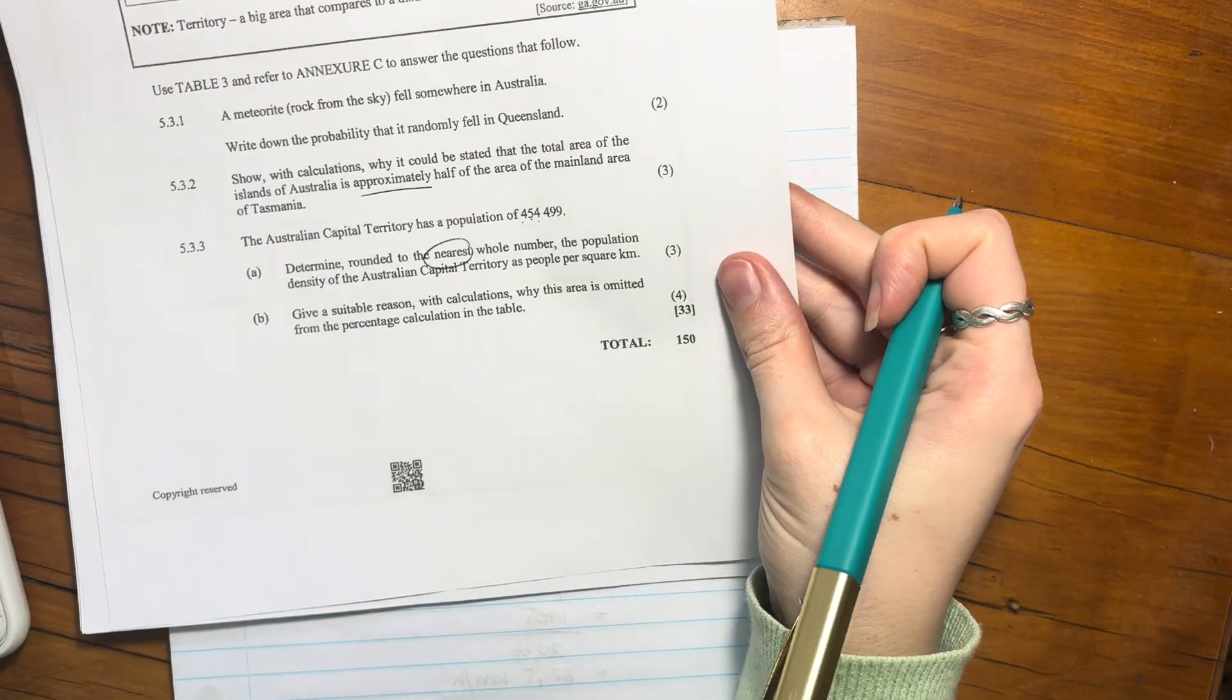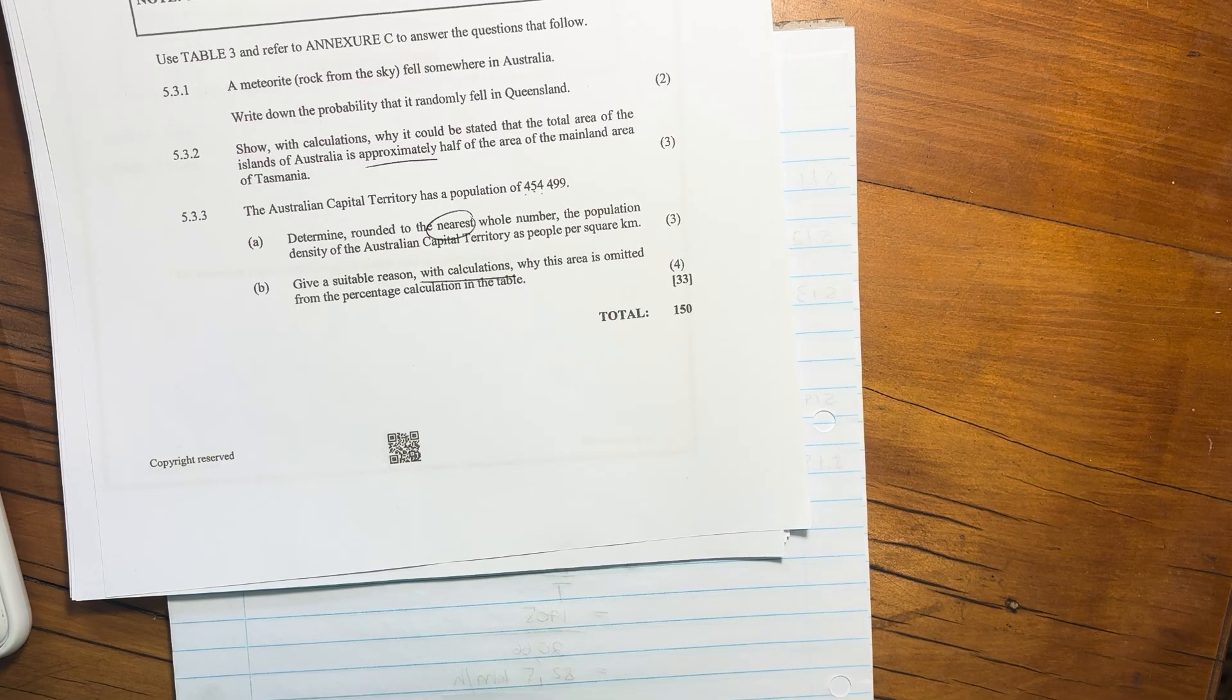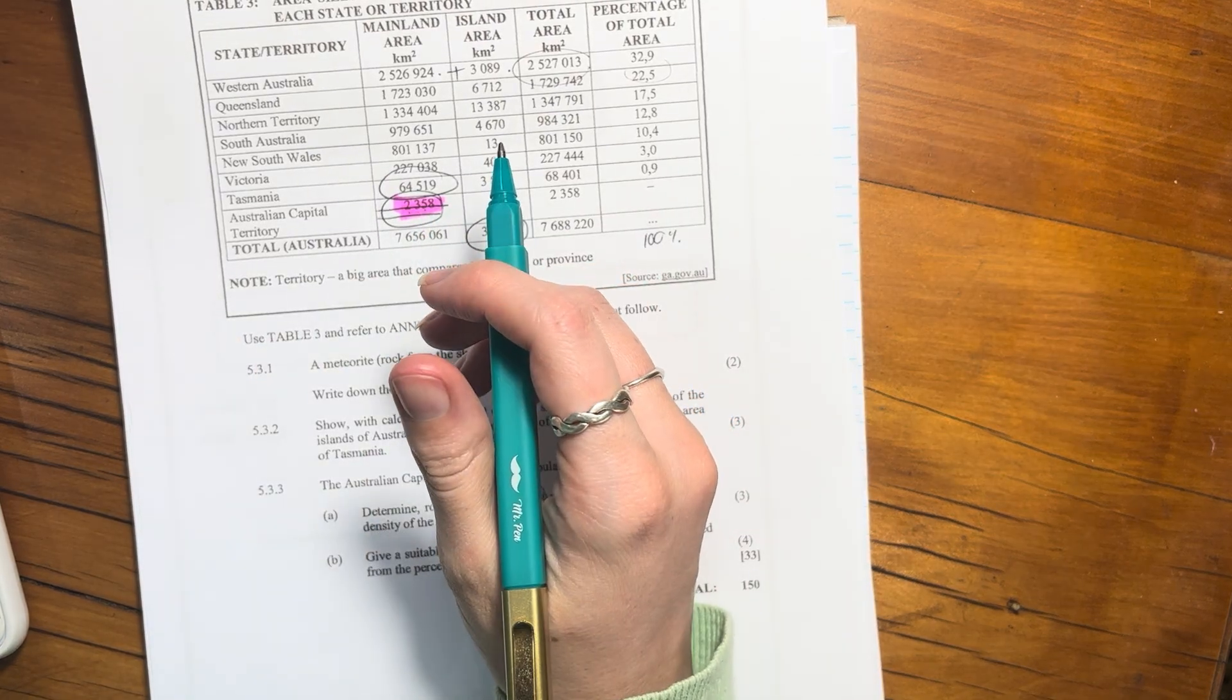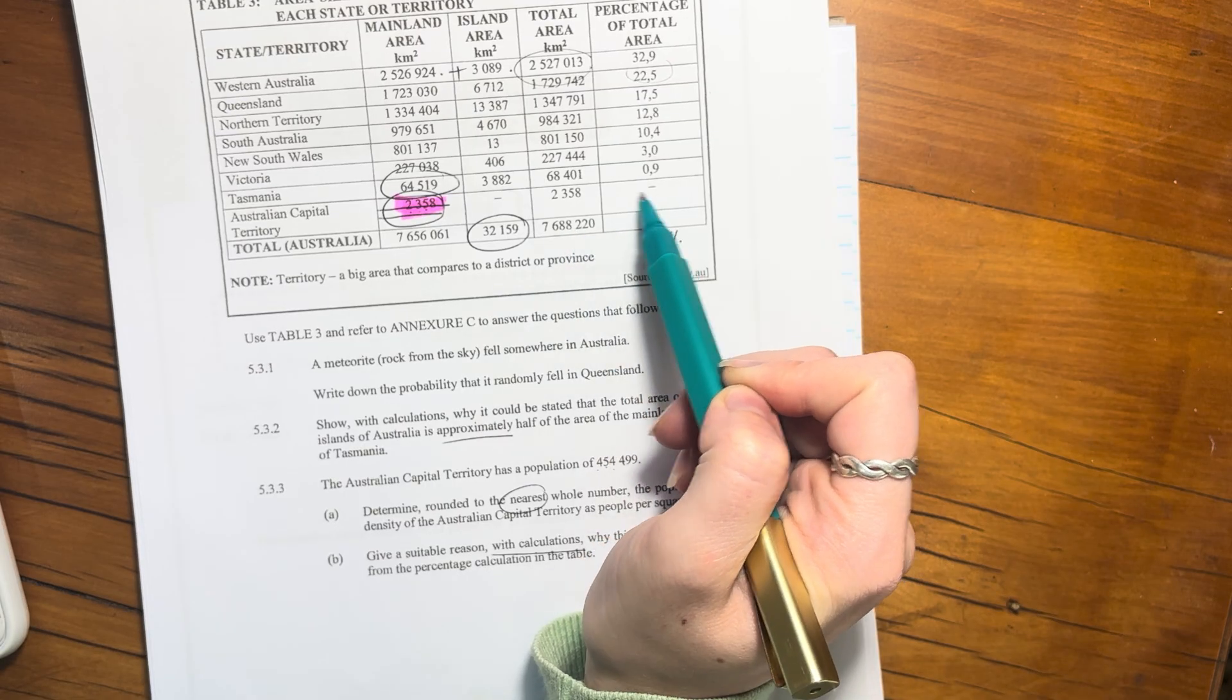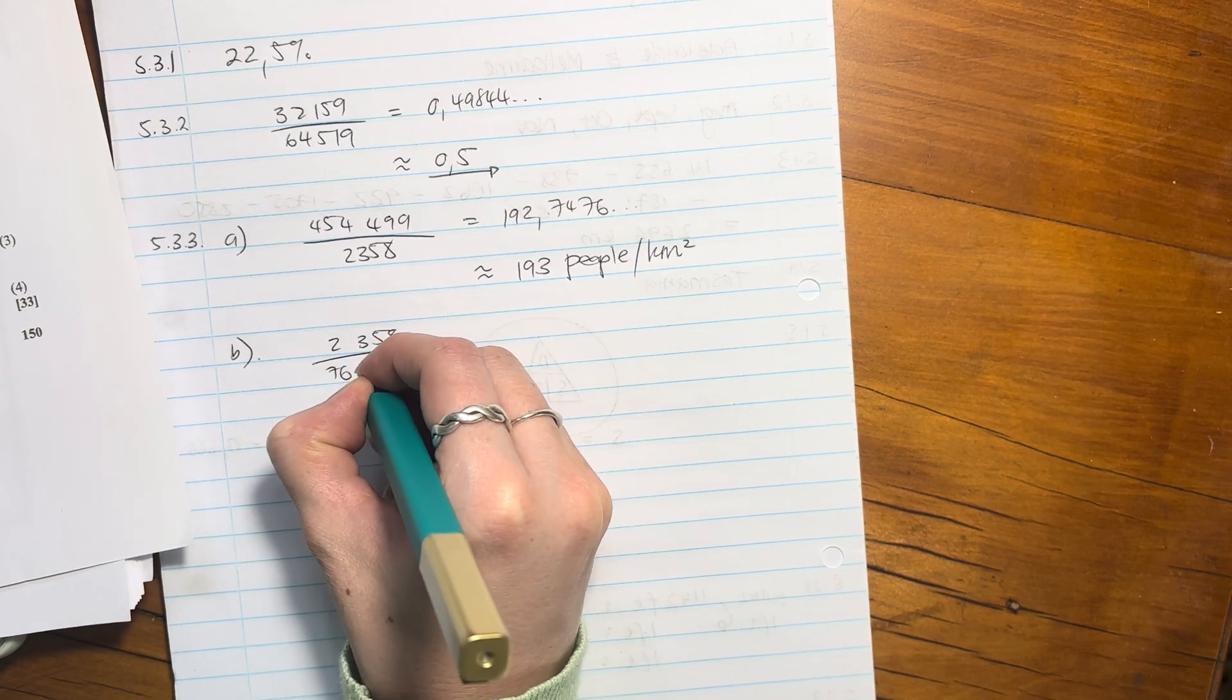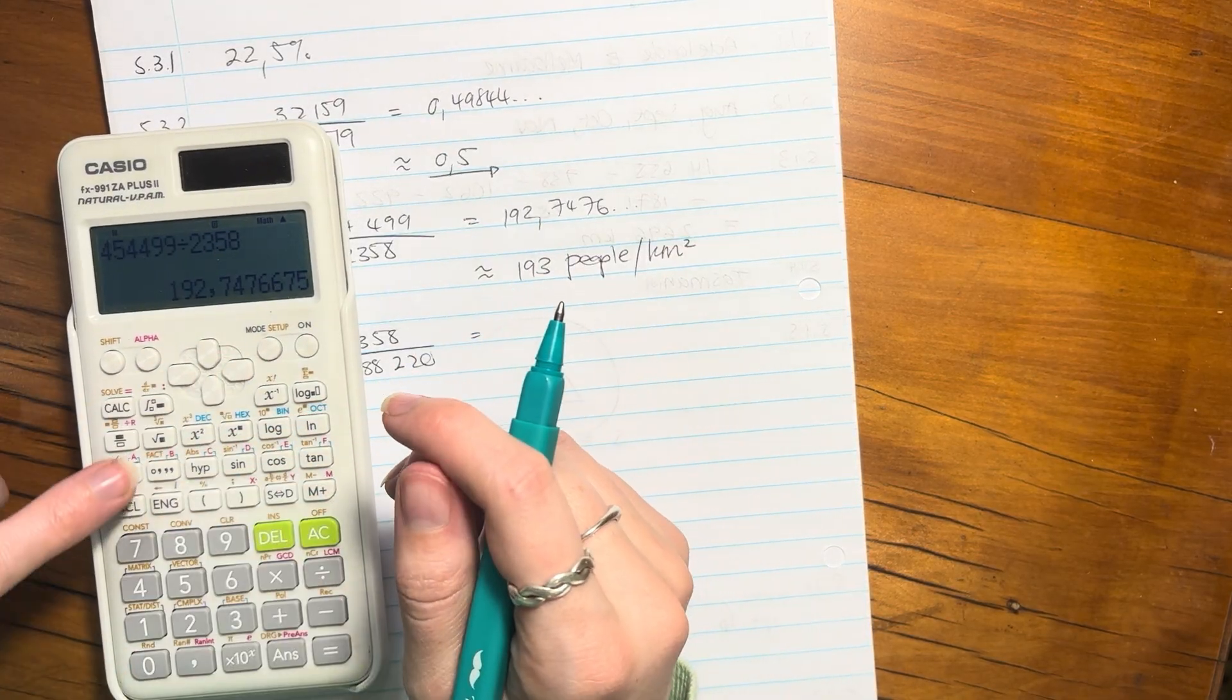Last question of this paper. Give a suitable reason, with calculations, why this area is omitted from the percentage calculation in the table. So we're looking at the Australian Capital Territory. So it's 2,358. So it's already looking quite small. Do you agree with me? It's quite small compared to the total. Do you see the total area there? That's 7,688,220. Why is it omitted there? Well, let's figure it out. So we can actually say, let's work out what the percentage would be and see if that tells us something. So basically it says the territory divided by the total area.